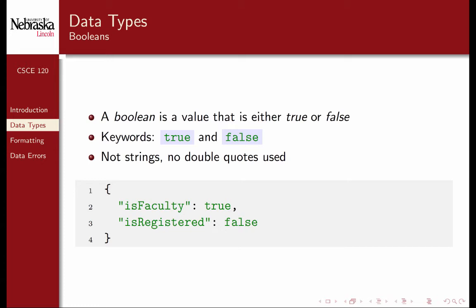A boolean is a value that is either true or false. In JSON, we use the keywords true and false. These are not strings, so you don't put double quotes around them. For example, isFaculty is set equal to true, and isRegistered is set equal to false.